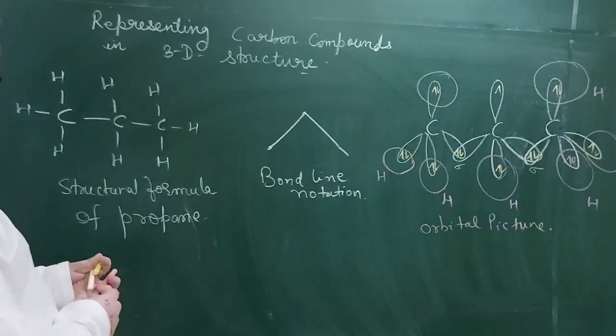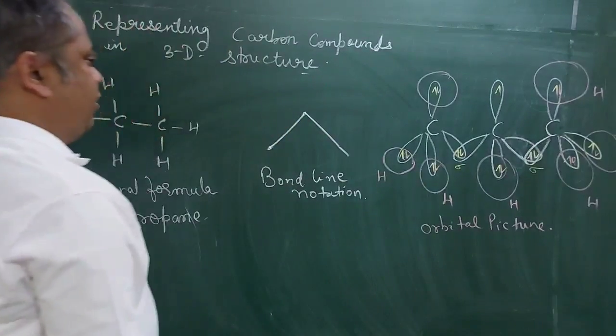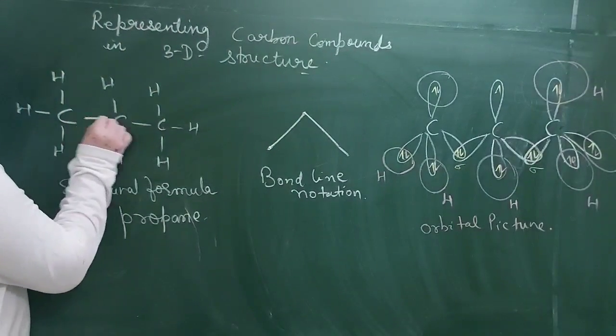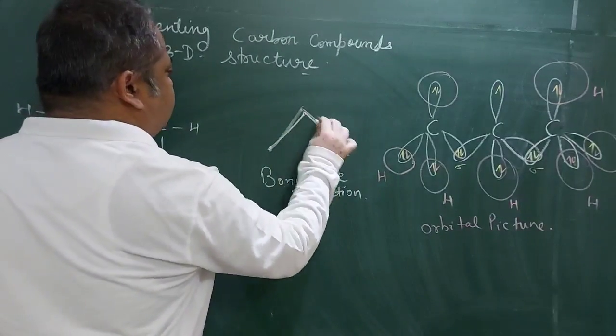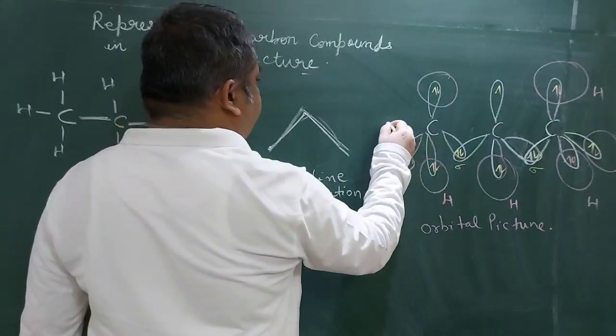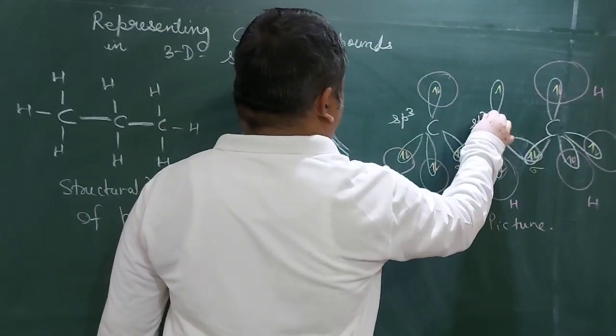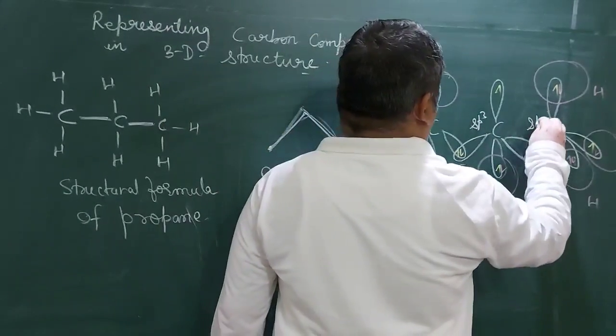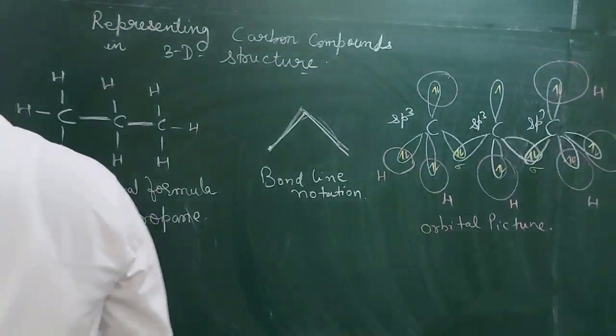What happens is that the bonds are in zigzag form. They are not like a straight line, they are in zigzag form. And since each of these carbon atoms are sp3 hybridized, so each of these are tetrahedral in shape.